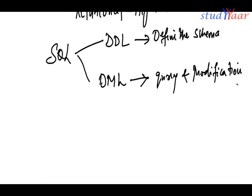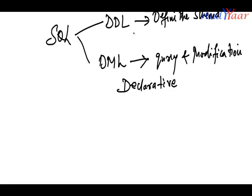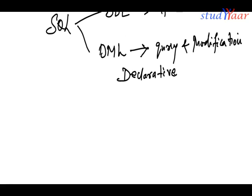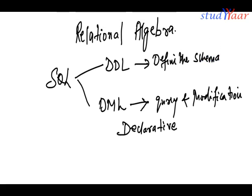The DML part is declarative. Declarative means you just have to specify what you need. You don't have to specify how you need it. SQL is going to do it itself. It is going to find the most optimal way to find your information.